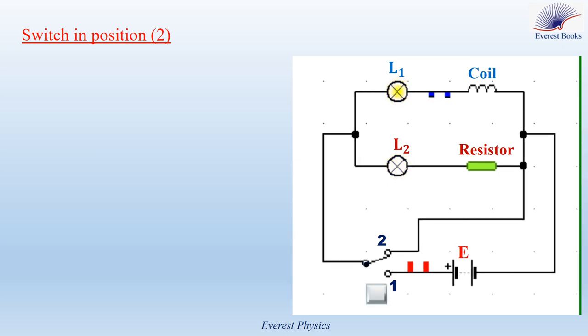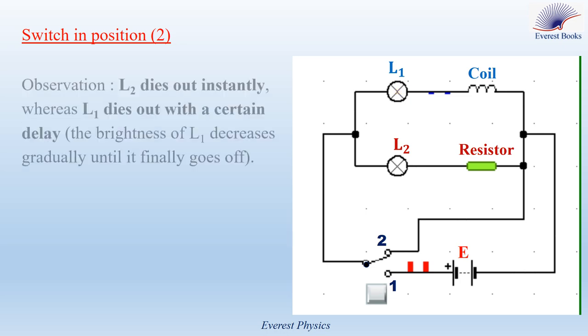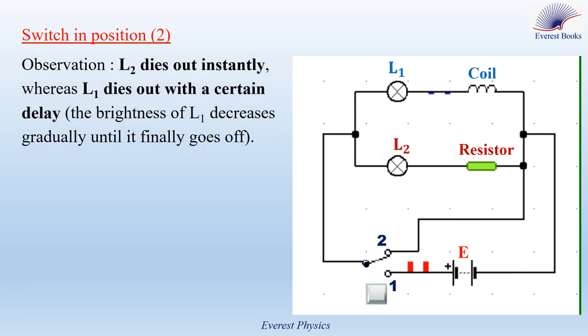So we observe that L2 dies out instantly, whereas L1 dies out with a certain delay, which means that the brightness of L1 decreases gradually until it finally goes off.